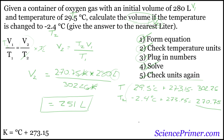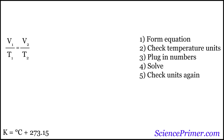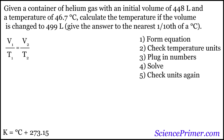The other way this question can be asked is to give two volumes and one temperature and be asked to find the other temperature. For the second problem: given a container of helium gas with an initial volume of 448 liters (V1) and a temperature of 46.7 degrees Celsius (T1), calculate the temperature T2 if the volume is changed to 499 liters (V2).